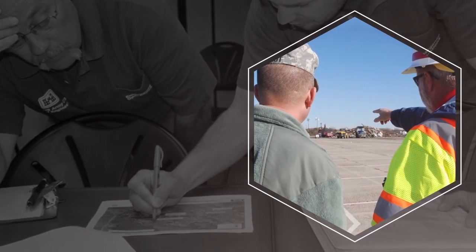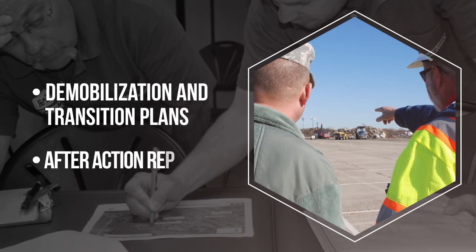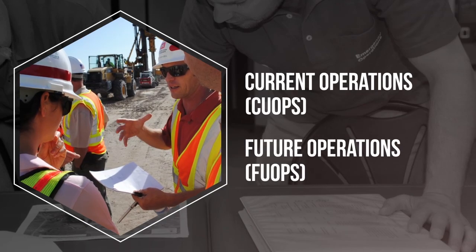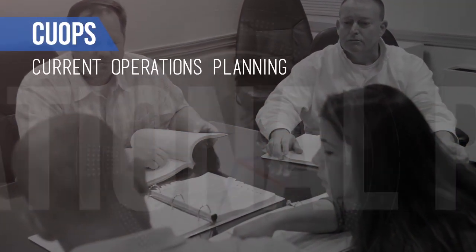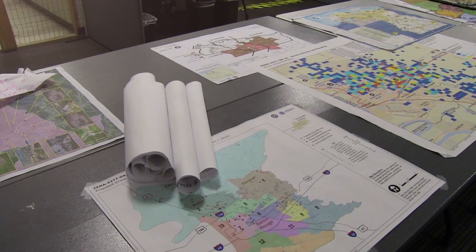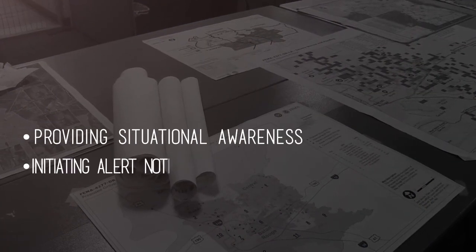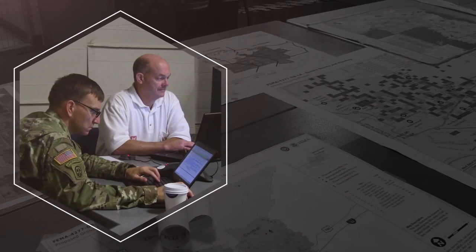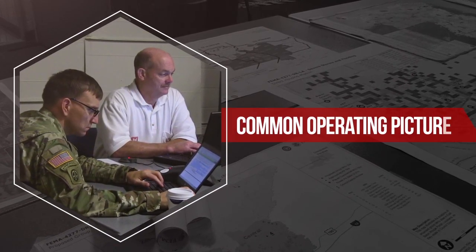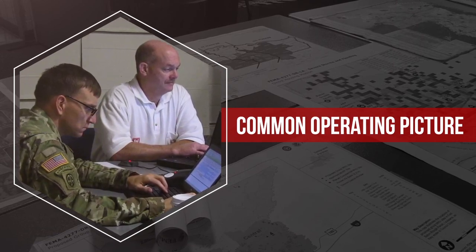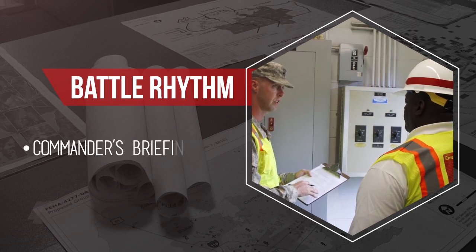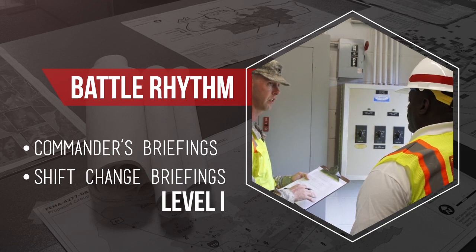The planning section is also responsible for the demobilization and transition plans and after-action report if required. At a minimum, the planning section will consist of current operations, or CU-OPS, and future operations, or FU-OPS. During EOC activations, CU-OPS is responsible for current operations planning that occur within the operational period, usually one day. Additional responsibilities include providing situational awareness, initiating alert notifications, collecting and disseminating critical information, and conducting crisis action planning. CU-OPS keeps the commander and staff informed throughout the event by providing a common operating picture, and will also be responsible for establishing and maintaining the battle rhythm for the event and conducting commander's briefings, or CUBs, and shift change briefings for level 1 or 24/7 operations.